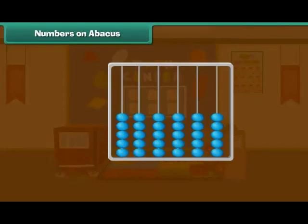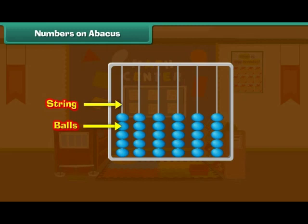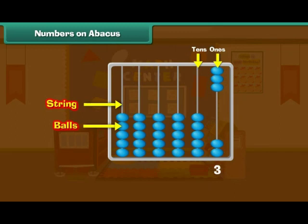Numbers on abacus. We can use an abacus for counting. This is an abacus — it has many strings and each string has many balls. We use the rightmost string to count ones, and the next string to count tens. This abacus has three balls in the ones string and two balls in the tens string, so the number is 23.